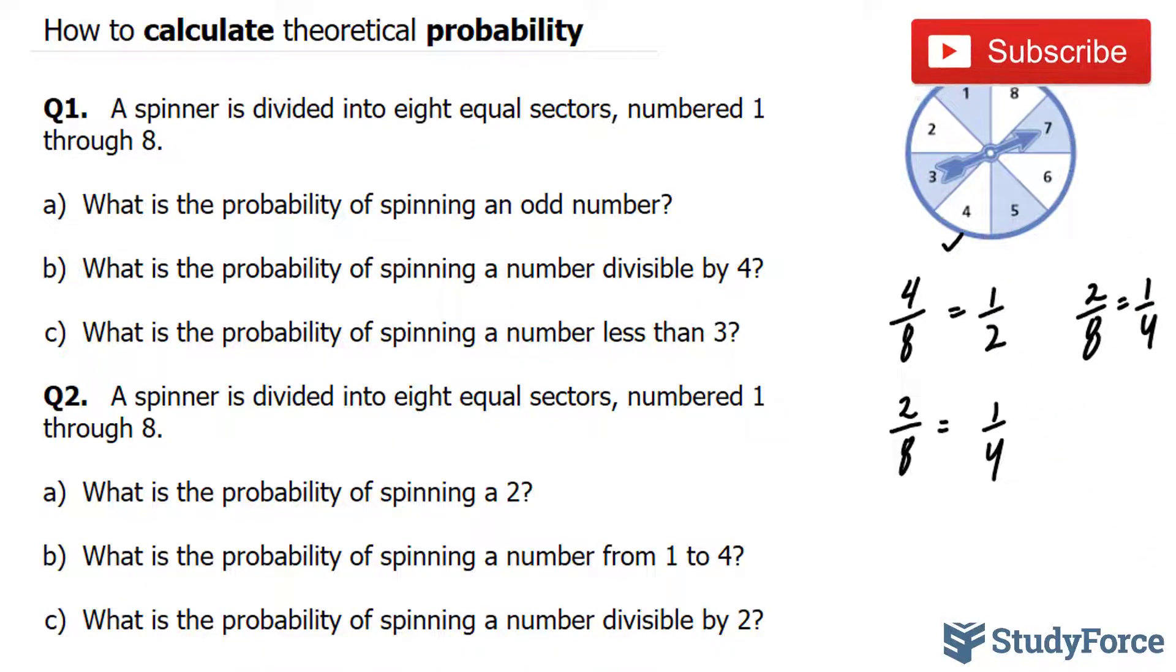In question two, we're asked, a spinner is divided into eight equal sectors, numbered one through eight. What is the probability of spinning a two? Well, that's one out of eight probability. There's only one two in the mix of numbers.